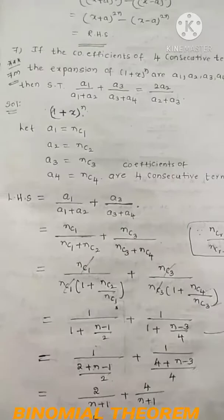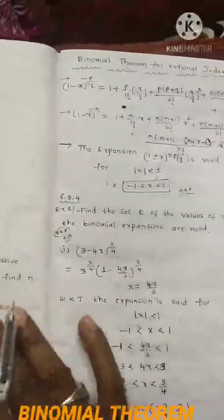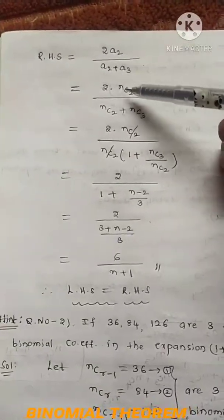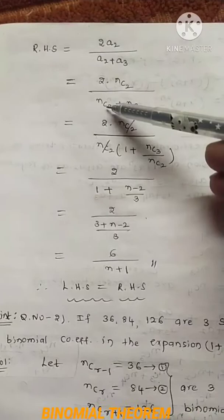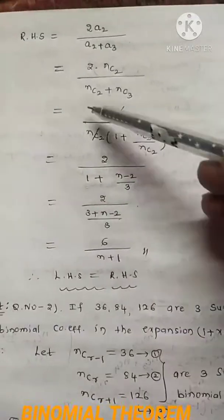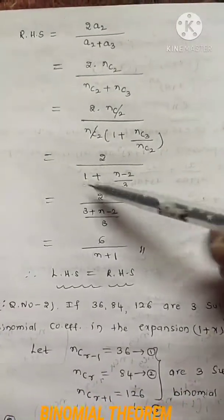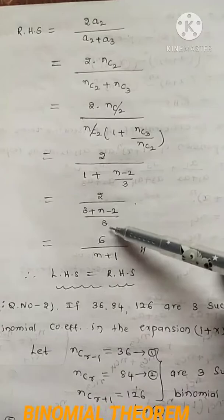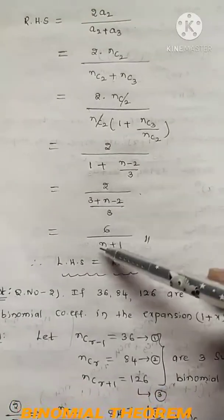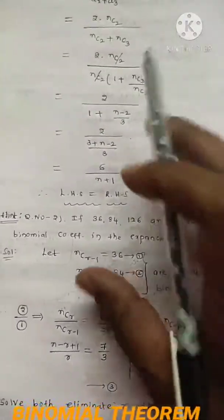For RHS: 2a2/(a2+a3) = 2·nC2/(nC2+nC3). Take nC2 common in the denominator: 2/(1 + nC3/nC2). Apply formula: nC3/nC2 = (n-2)/3, giving 2/(1+(n-2)/3) = 2·3/(3+(n-2)) = 6/(n+1). Therefore LHS = RHS = 6/(n+1), hence proved.